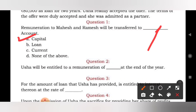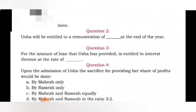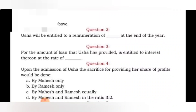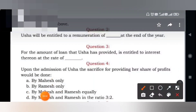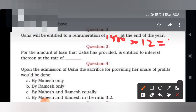Question number 2: Usha will be entitled to a remuneration of how much at the end of the year? Usha is entitled to a salary of 1,500 per month. So we calculate 1,500 multiplied by 12, which equals 18,000. She will be getting 18,000 as her remuneration annually.